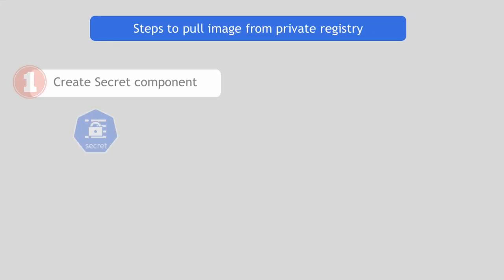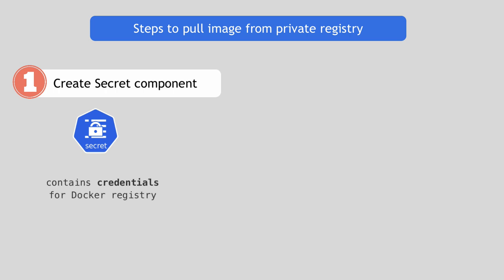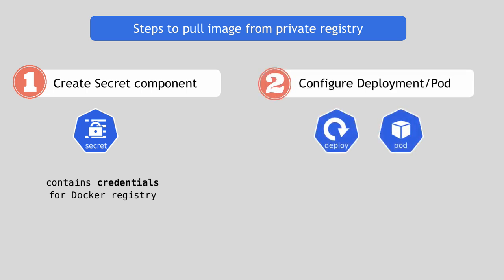You do that using two steps. First, you create a Secret component in Kubernetes that contains an access token or credentials to your Docker registry so it can authenticate with the registry. Second, you configure your deployment or pod to use that secret via a specific attribute called imagePullSecrets. I'm going to show you all of that in practice.